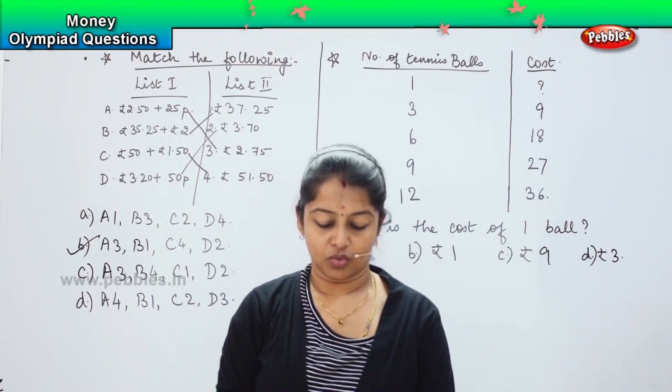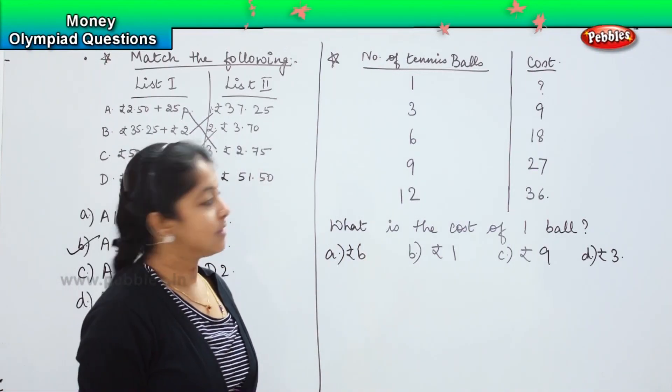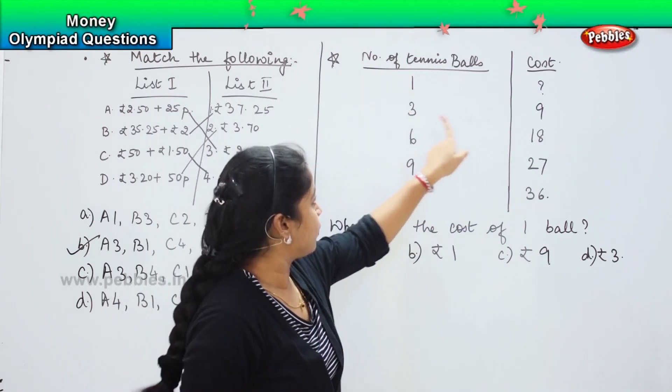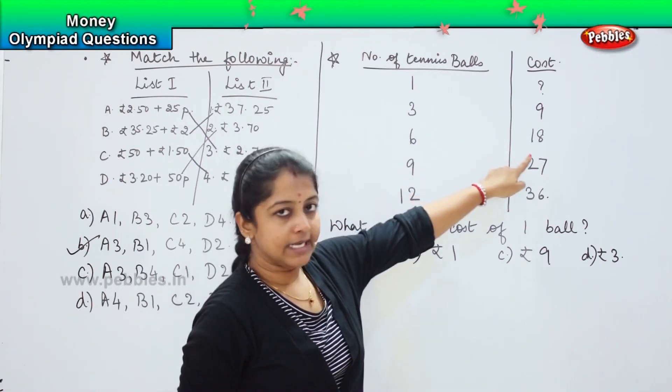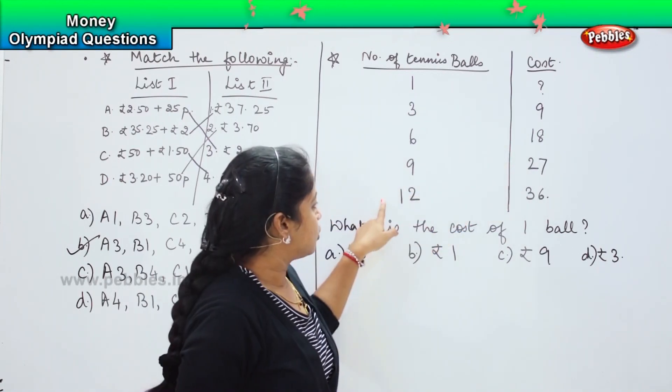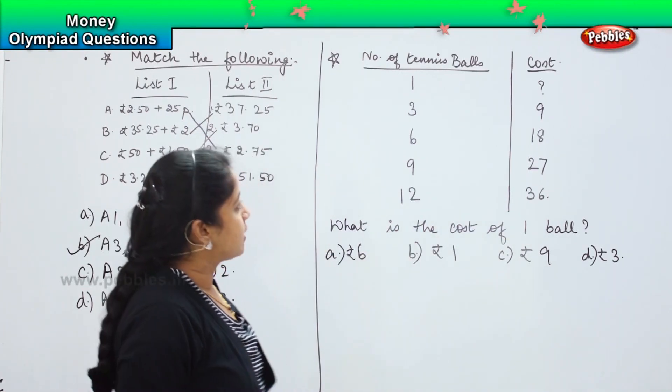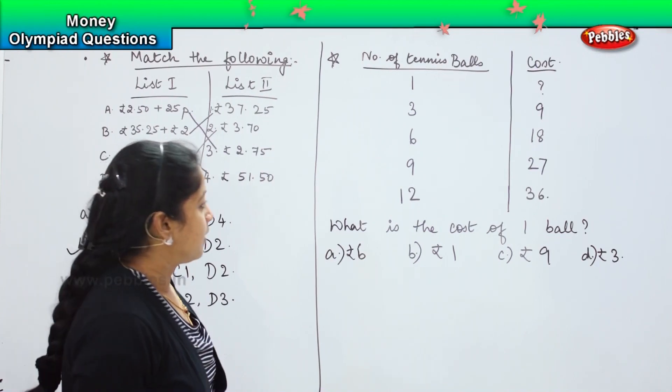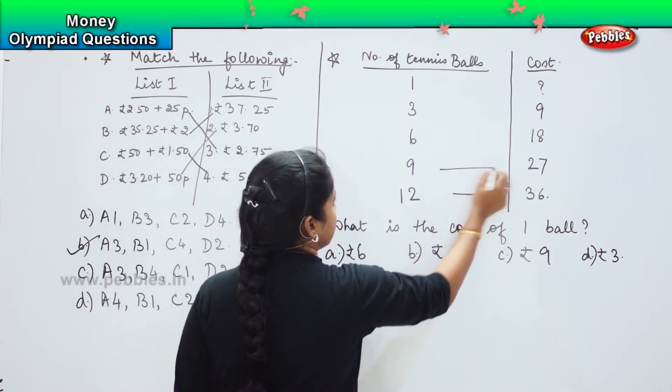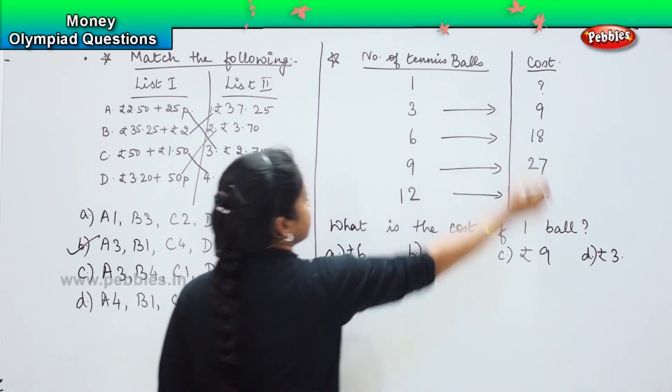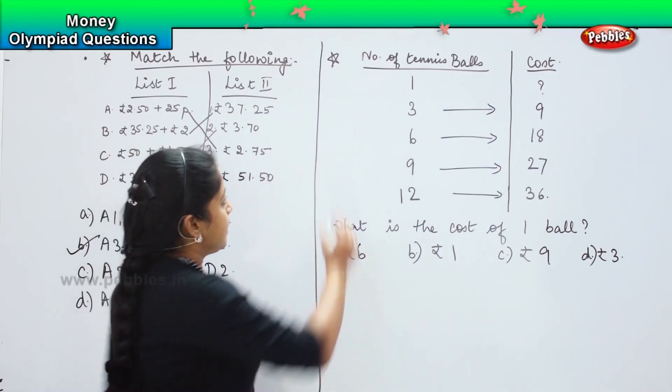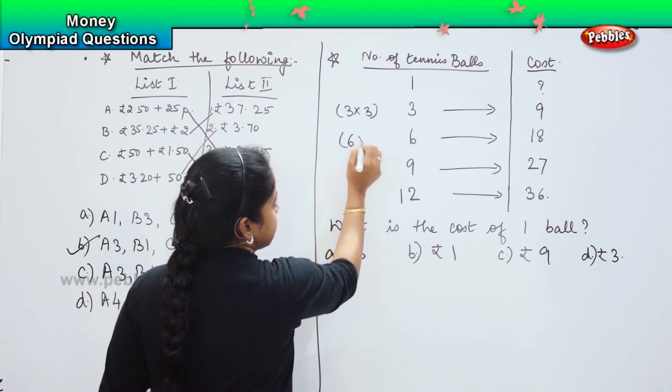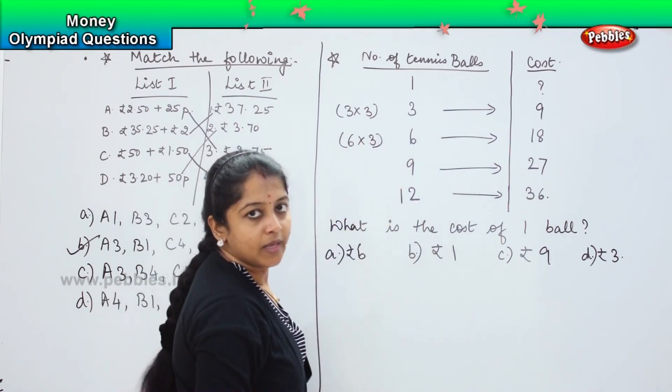So, can you tell me what is the answer? Cost of one tennis ball is something, 3 is 9 rupees, 6 balls is 18, 9 balls is 27, and 12 balls is 36. So, what is being followed here, children? Just see properly and tell me. Yes, they all are following the multiplication table of 3, right? 3 into 3 is equals to 9. Similarly, here, 6 into 3 is equals to 18.